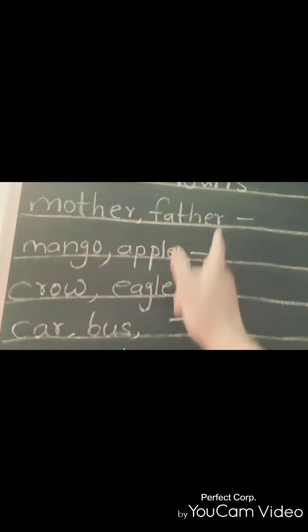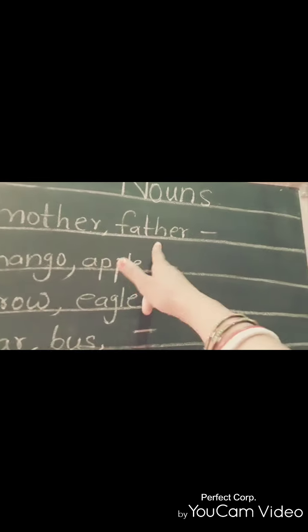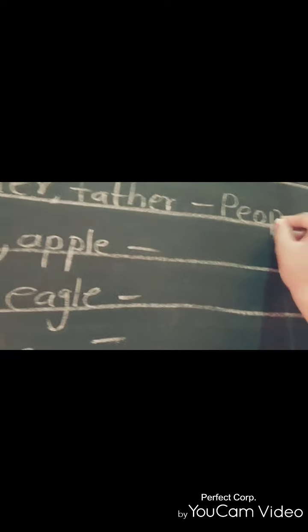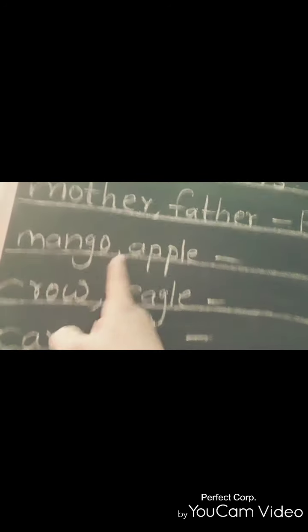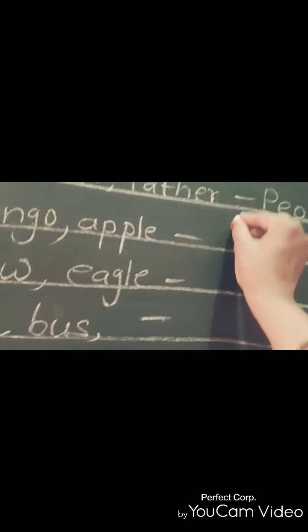In first line, I wrote the name of mother and father. These two names come under the name of people. In next line, I wrote the spelling of mango and apple. These all are the types of fruits.